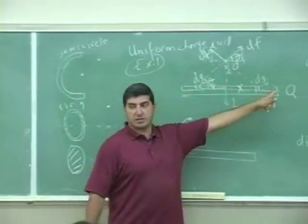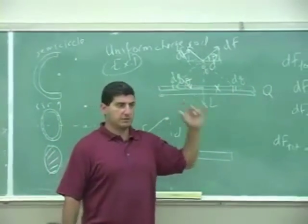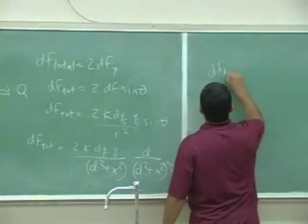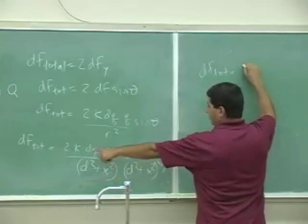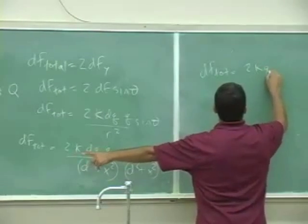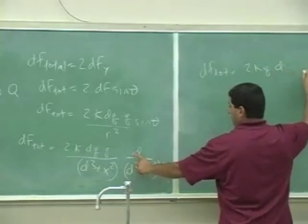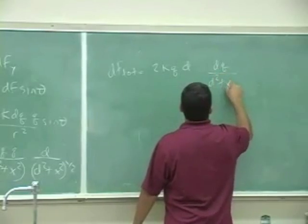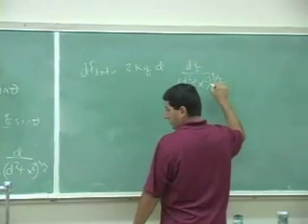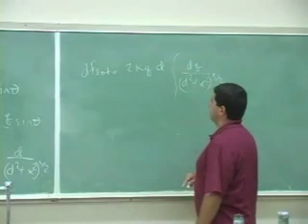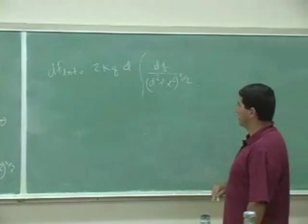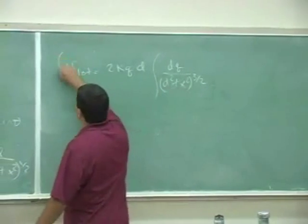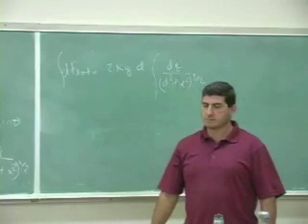Because what I'm going to do then is integrate the thing. So now I have an expression, df total is 2k, take the q out of it, take the d out of the integral, keep the dq over d squared plus x squared to the three halves power. 2kq times d, times dq over d squared, and then integrate this, that gives you the total force.